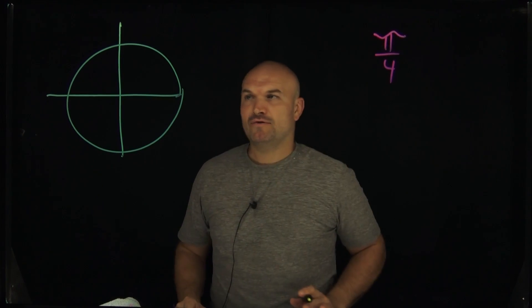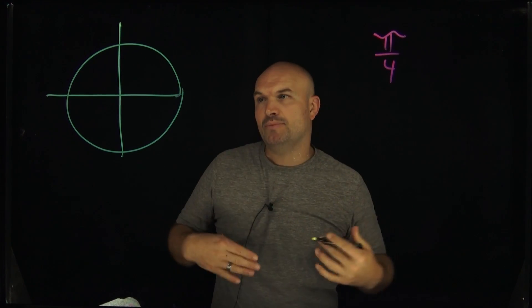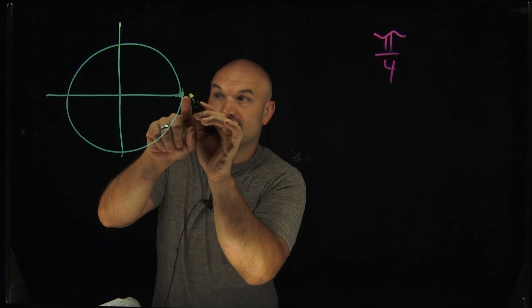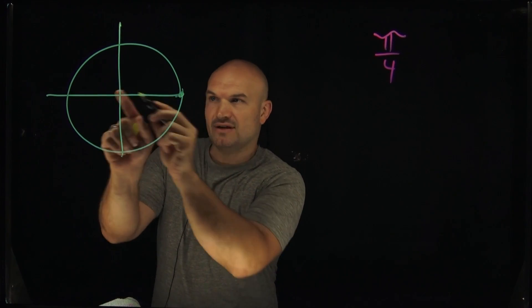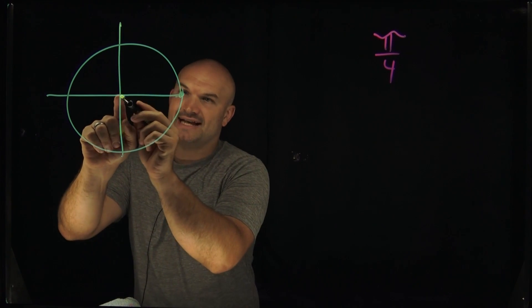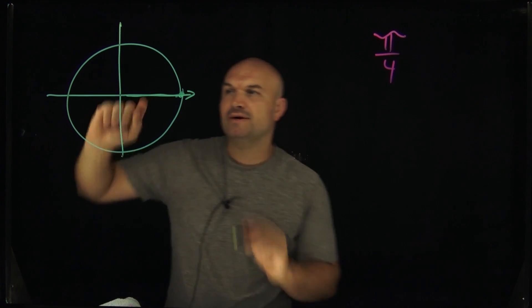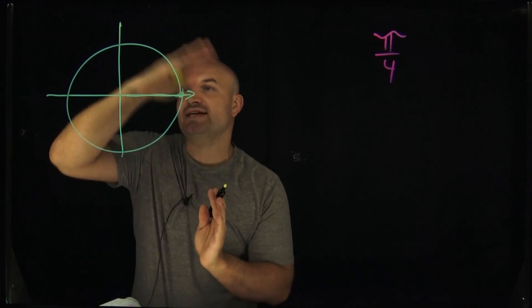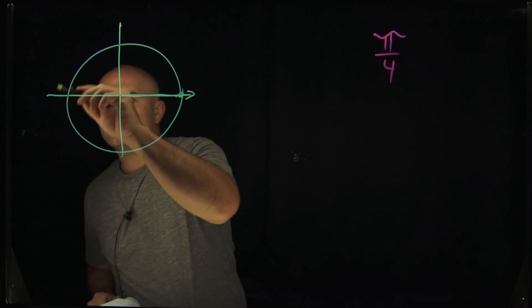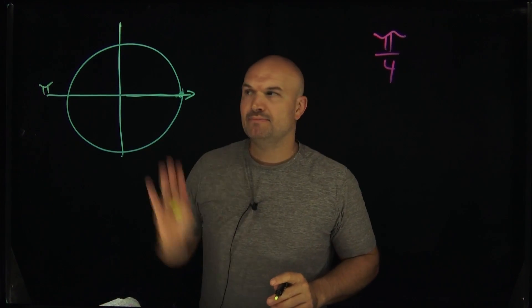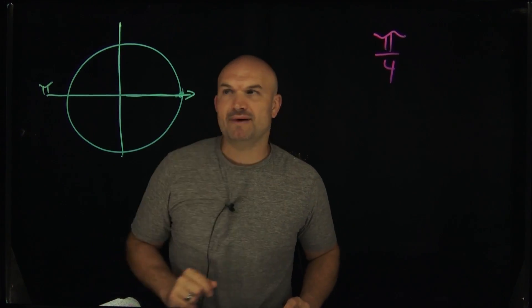Now when we're dealing with pi over 4, what that's basically doing is taking pi and breaking that up into four equal parts. Here's our starting point, which is going to be at zero, because whenever we're graphing an angle in standard form, we're always starting at the positive x-axis. Then we're going to rotate counterclockwise. Halfway around a circle is pi, and all the way around is 2 pi. But we're talking about only one-fourth of pi.